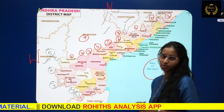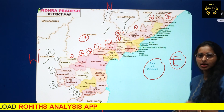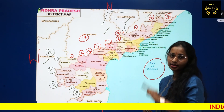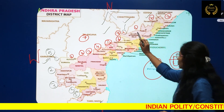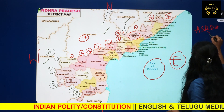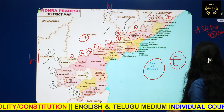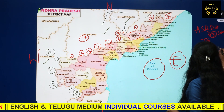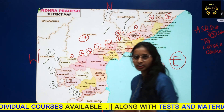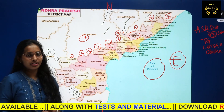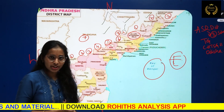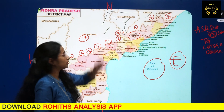To summarize: 5 districts share border with Karnataka, 7 districts share with Telangana, 1 district shares with Chhattisgarh, and 3 districts share with Odisha. Notably, one district — Alluri Sitarama Raju — shares border with all 3 northern states: Telangana, Chhattisgarh, and Odisha.